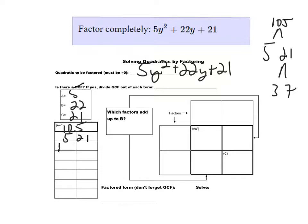So 15 times 7 is the 105, and it adds to 22. So 15 and 7 is what I want. I'm going to write 5y². I'm going to write 21 here. I'm going to write 15y here. I'm going to write 7y here.